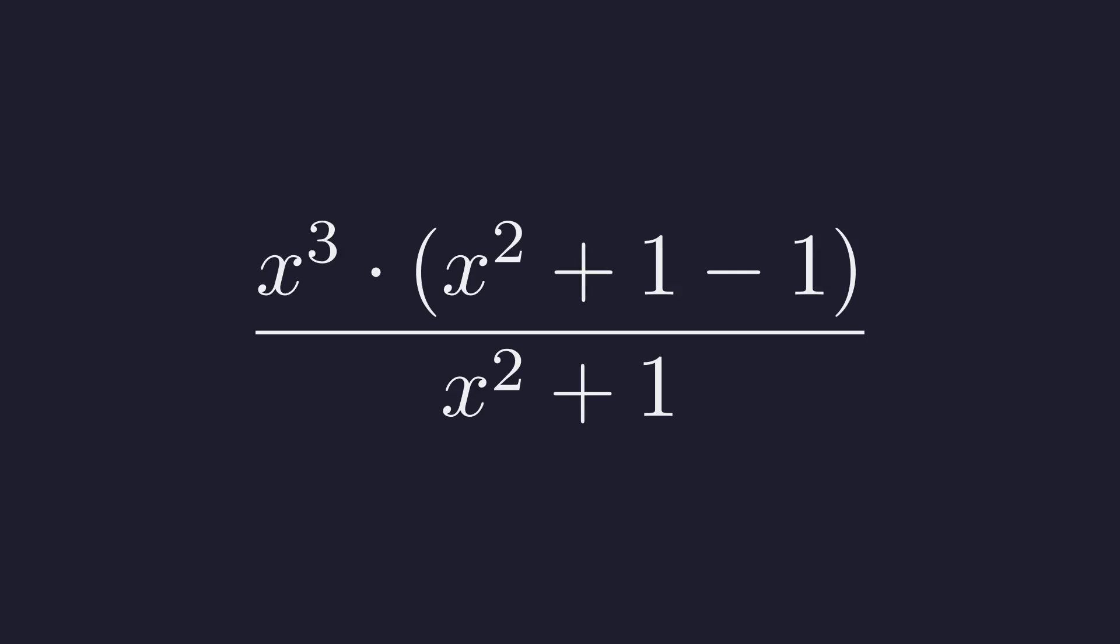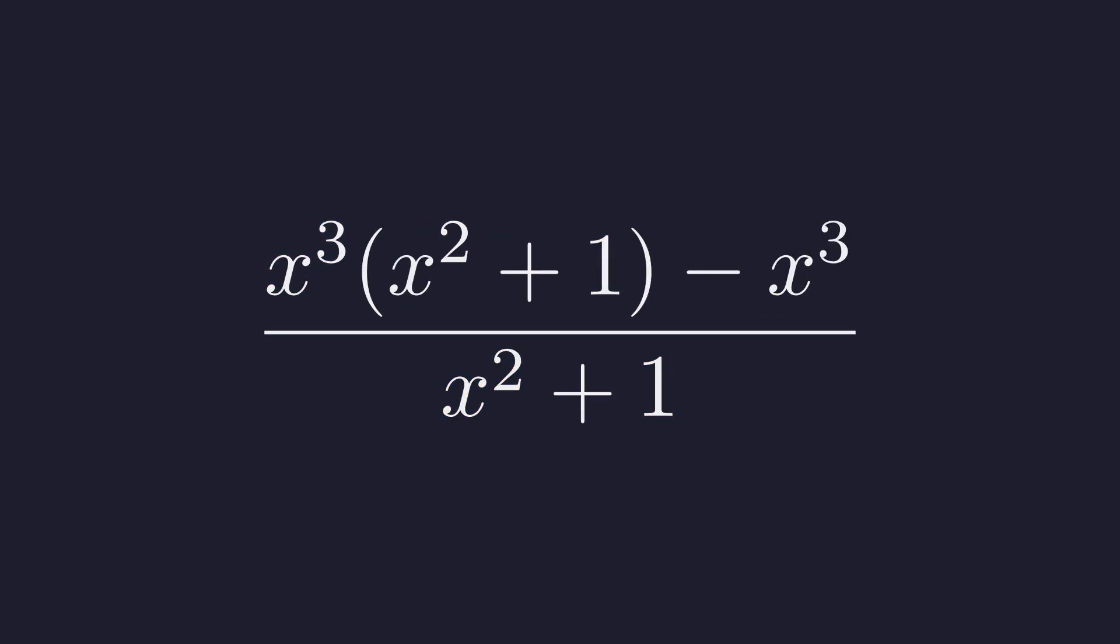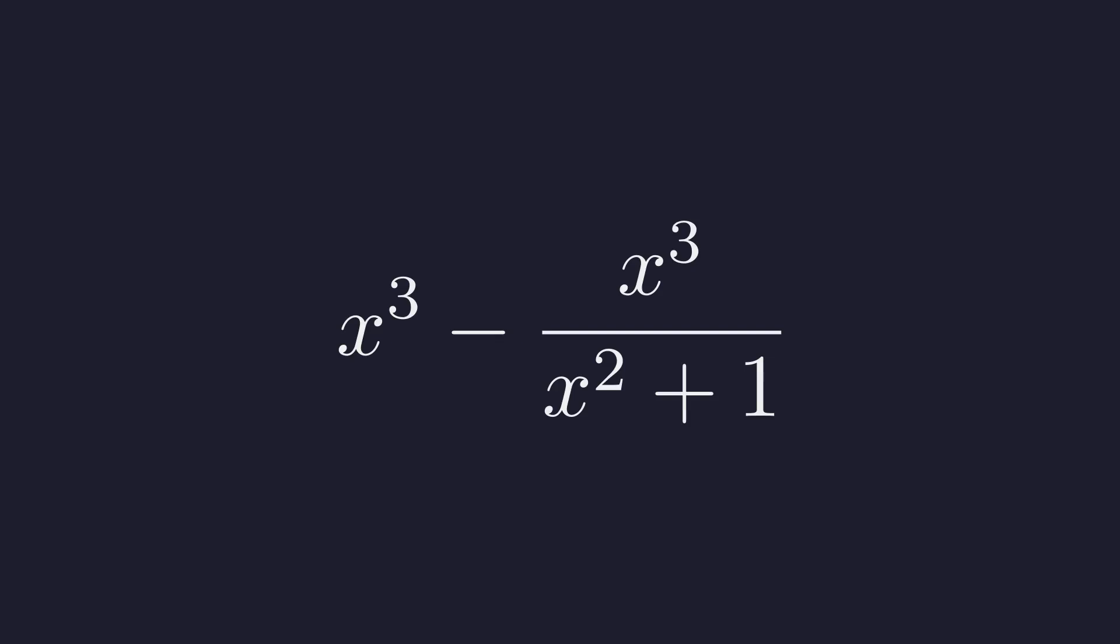We get x cubed times the quantity x squared plus 1 minus 1, all over x squared plus 1. Distribute x cubed: x cubed times x squared plus 1 minus x cubed, all over x squared plus 1. The first term has x squared plus 1 in both numerator and denominator. They cancel, leaving x cubed minus x cubed over x squared plus 1.